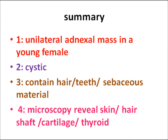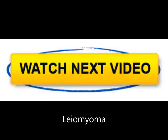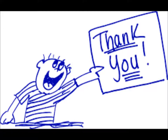To summarize all the information from the case scenario, gross appearance, and microscopy: there is a unilateral adnexal mass in a young female; it is cystic and contains hair, teeth, and sebaceous material; and microscopy reveals skin, hair, and thyroid tissue. So the diagnosis is teratoma. Now watch the next video on leiomyoma — a benign tumor of the smooth muscle cells. Thank you for watching.